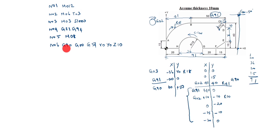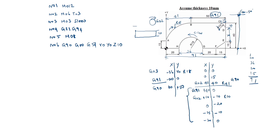G90 is absolute command, G00 is rapid mode, G54 is work coordinate system. Start from X0, Y0. Z10 means the tool is 10 mm above the workpiece. Next, N07: G01, Z minus 10, F18. Z minus 10 means the tool comes down minus 10. G01 is linear interpolation.